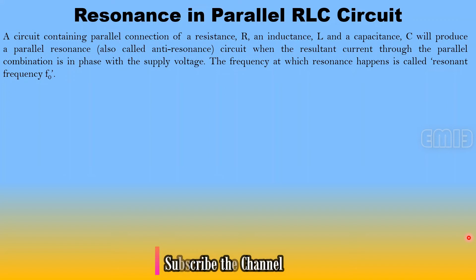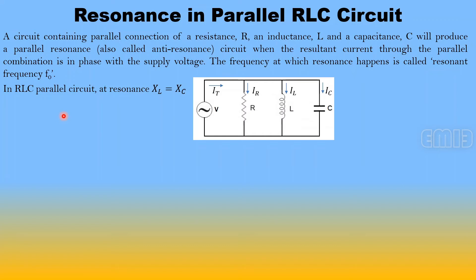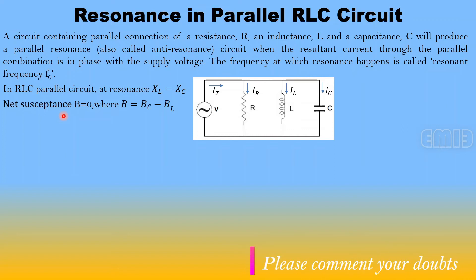Similar to resonance in a series RLC circuit, at resonance the net susceptance becomes zero, and the current drawn from the source is in phase with the applied voltage. The frequency at which resonance occurs is called the resonant frequency f0. At resonance, inductive reactance XL equals capacitive reactance XC, meaning the net susceptance B = BC − BL = 0.